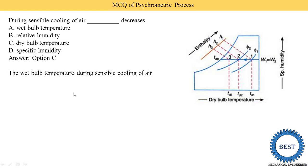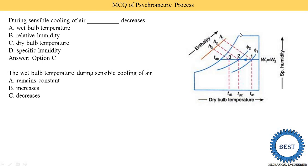The wet bulb temperature during sensible cooling of air: does it remain constant, increase, or decrease? In this image, the inclined line represents both enthalpy and wet bulb temperature. We see that the wet bulb temperature at point 1 is Tw1. Moving from the outlet side to the inlet side, the value of wet bulb temperature is increased. So during sensible cooling, the wet bulb temperature is decreased — answer C is correct.